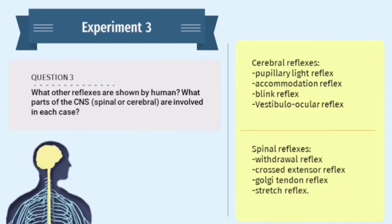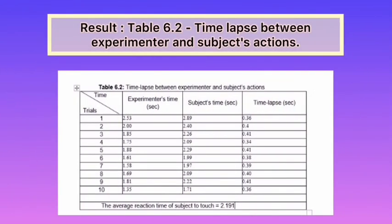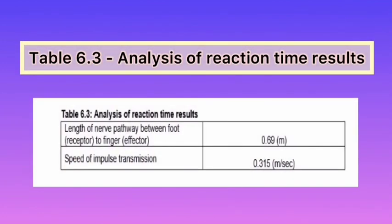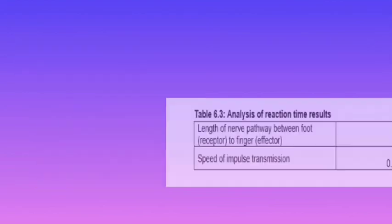That's all for Experiment 3. This is the result for the third experiment, which shows the time lapse between experimenter and subject actions. This is the analysis of reaction time where the length of the nerve pathway is recorded.